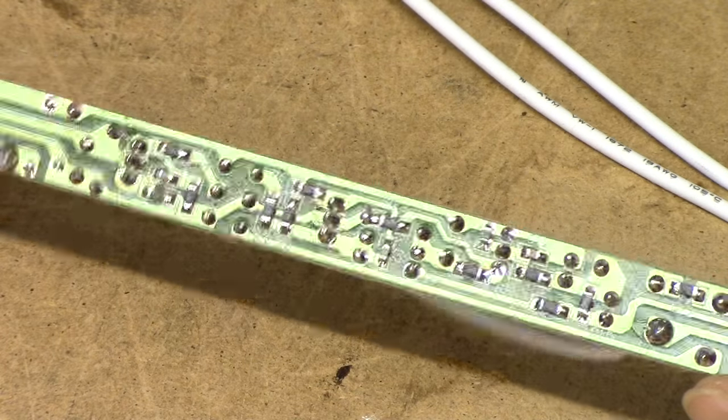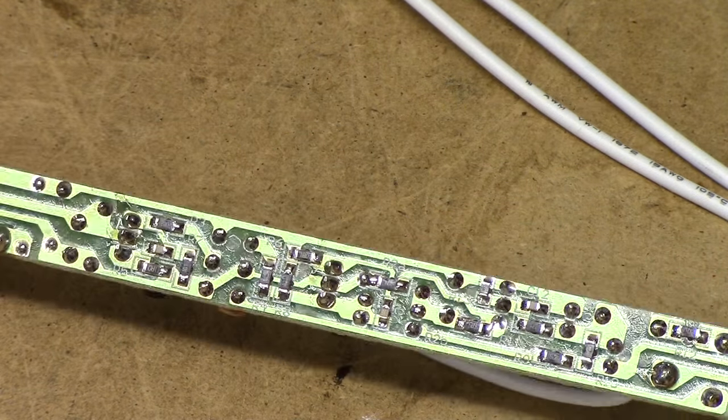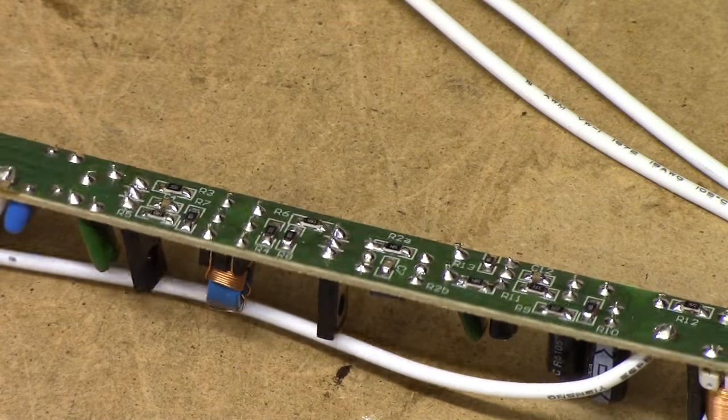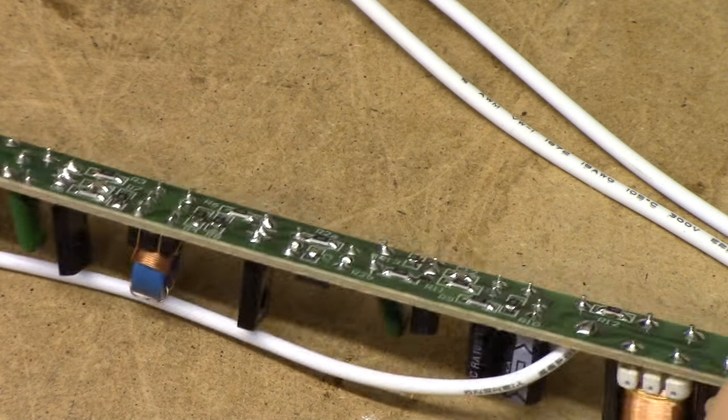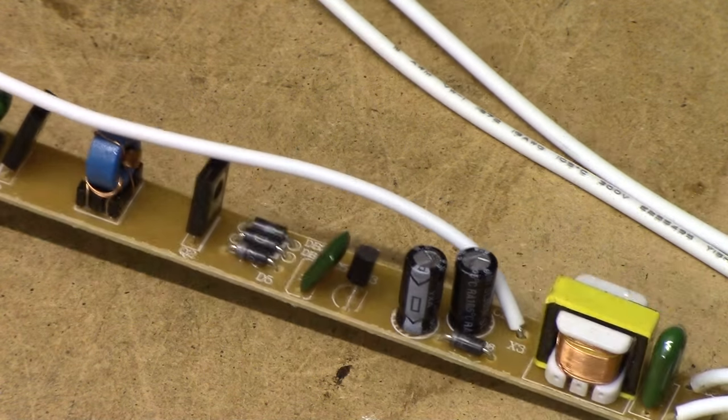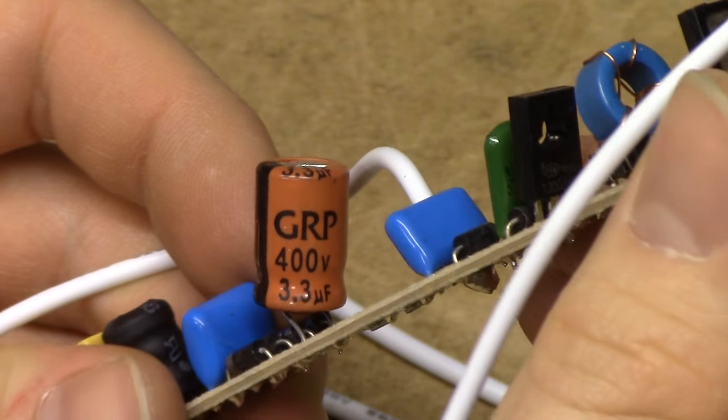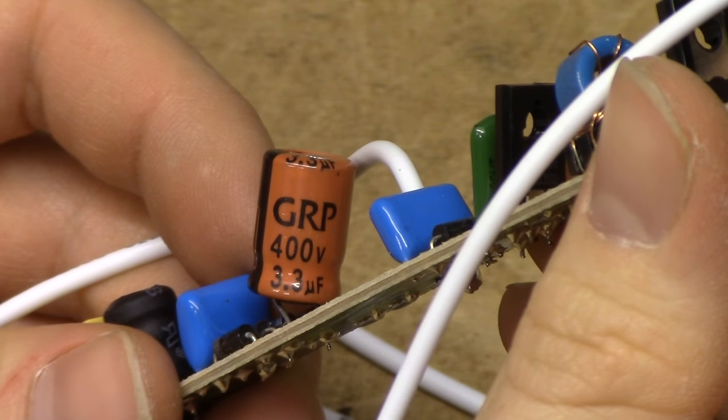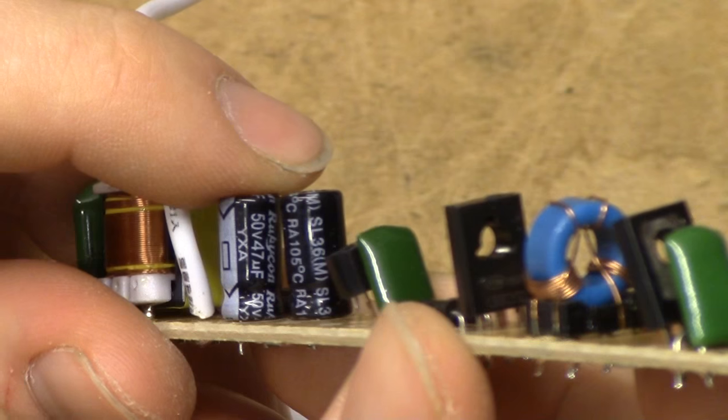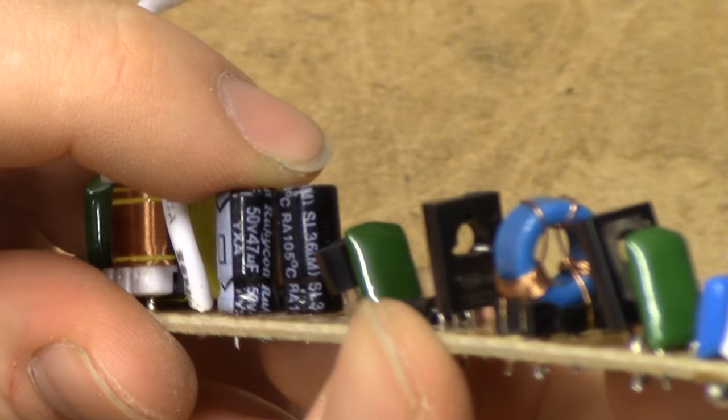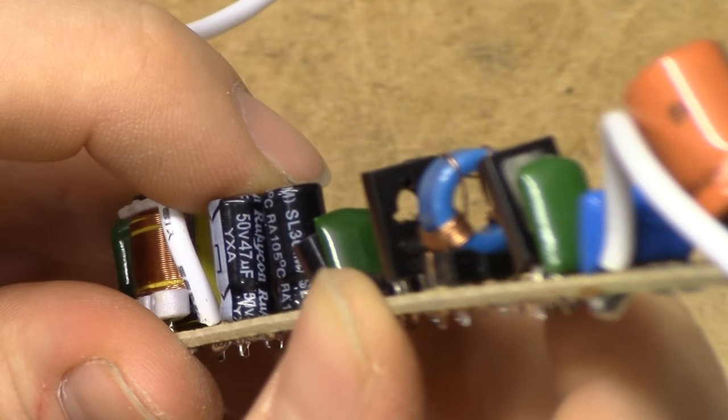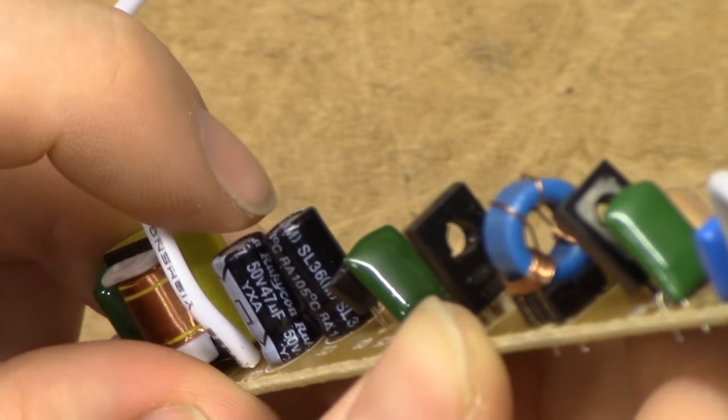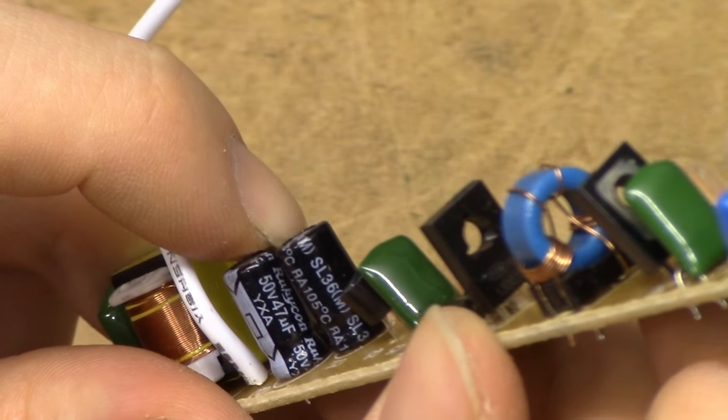And the soldering quality on this board actually looks to be of excellent quality. I mean, look at that shine. I'm really impressed by this, although you can't have everything because the primary cap's a GRP brand and the secondary caps are not Rubicons but rather Rupeecons. Whatever it is, it's not a genuine Rubicon logo sitting there.